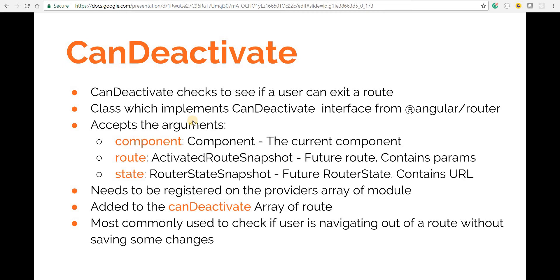The canDeactivate method accepts three arguments: the component we want to navigate away from, the route which is an instance of ActivatedRouteSnapshot, and the state which is an instance of RouterStateSnapshot. Once we're done defining the guard, we use the canDeactivate property inside a route object and specify the name of the guard we created.